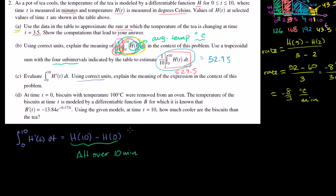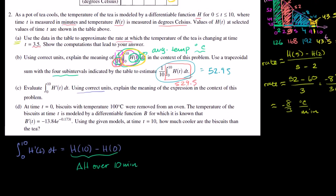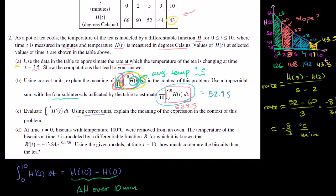We can actually evaluate it. We know what our temperature was after 10 minutes — h of 10 is 43 degrees Celsius. So that's 43 right here. And from that we subtract our initial temperature, our temperature at 0 minutes, which is 66 degrees Celsius.